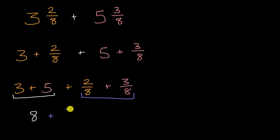So this is going to be eight plus five-eighths, which we can express as a mixed number as just being equal to eight and five-eighths.